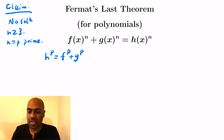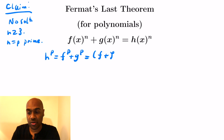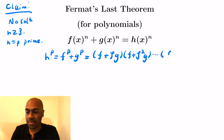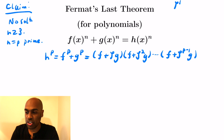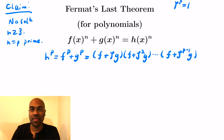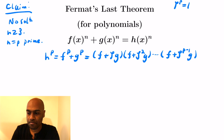Setting n = p to remind ourselves it's prime, we have h^p = f^p + g^p. Now f^p + g^p factors as a product: (f + g)(f + ζg)(f + ζ²g)···(f + ζ^(p−1)g), where ζ is a primitive p-th root of unity — a complex number whose p-th power is 1.